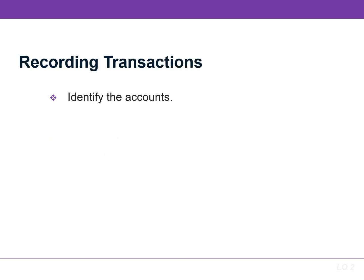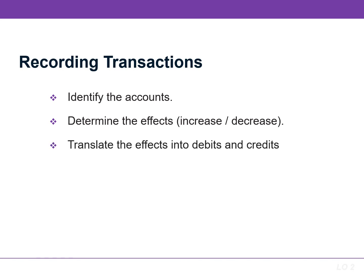When recording transactions, follow these steps. First, we identify the accounts. The second step is we determine the effects — did the account increase or decrease? We now have one more step, which is to translate the effects into debits and credits.